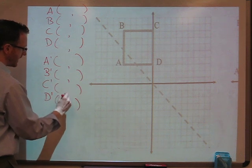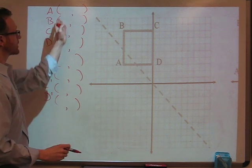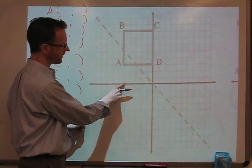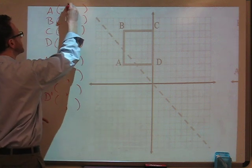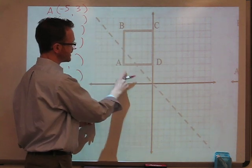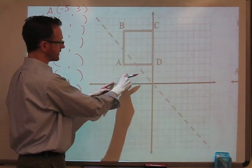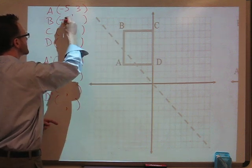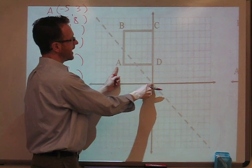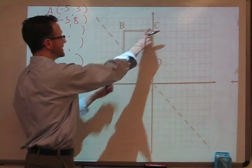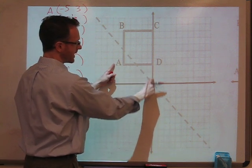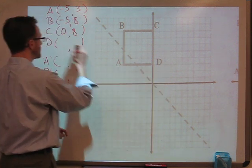We'll start by recording our vertices. Point A is at negative five, three. Vertex B is at negative five, eight. C is at zero, eight — the same y-altitude as B. And D is at zero, three — the same y-altitude as A.